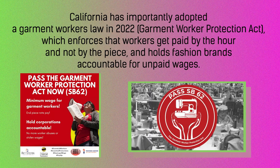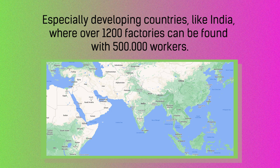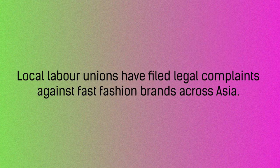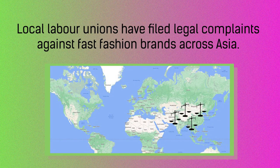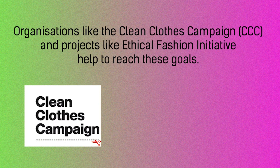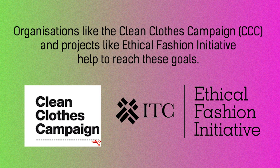California has importantly adopted a Garment Workers Protection Act in 2022, which enforces that workers get paid by the hour and not by the piece, and holds fashion brands accountable for unpaid wages. And what about other countries? Especially developing countries like India, where over 1,200 factories can be found with 500,000 workers earning around 60 US dollars per month. Local labor unions have filed legal complaints against fast fashion brands across Asia. In the EU, there are also a set of policies to make the garment sector safer and more reliable with wages. Organizations like the Clean Clothes Campaign and projects like the Ethical Fashion Initiative help to reach these goals.